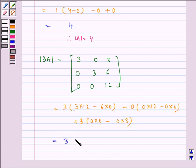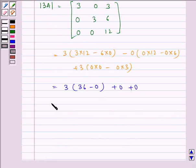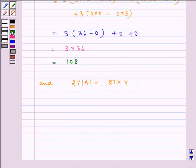Which is equal to 3 times 36, which is equal to 108. And we have 27 times determinant A equals 27 times 4, which is equal to 108.